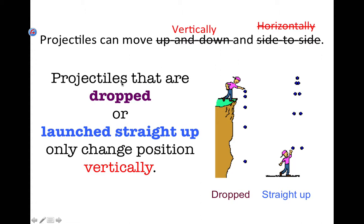We're going to start our study with projectiles that are dropped or projectiles that are launched straight up. Those projectiles only change position vertically. So as we begin, we'll only be dealing with projectiles where we have a change in the up and down position and velocity. We won't have any horizontal information to consider.